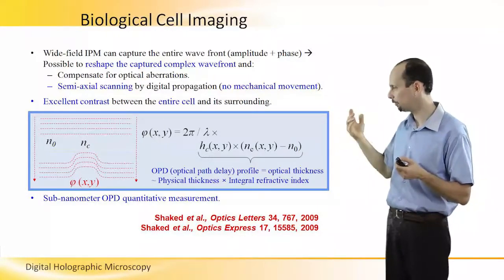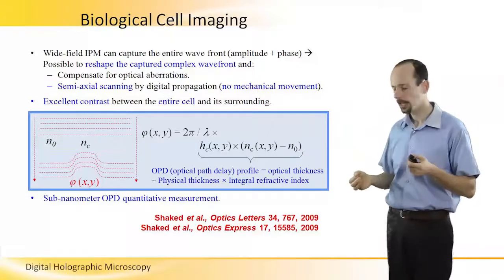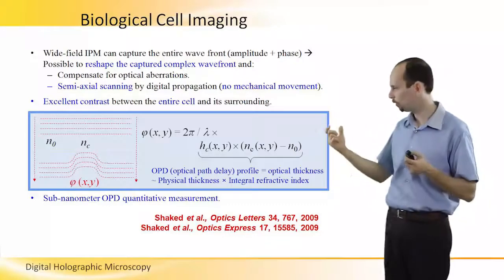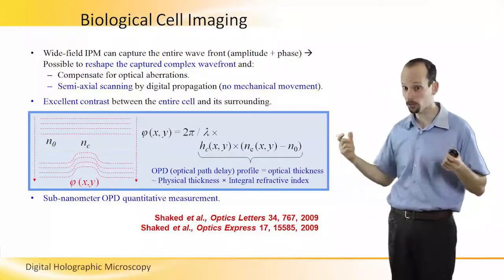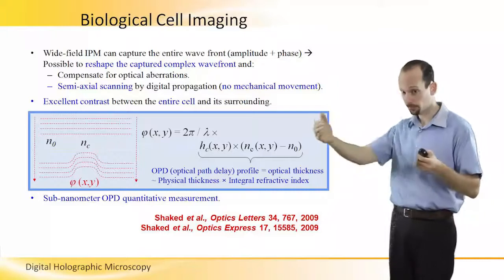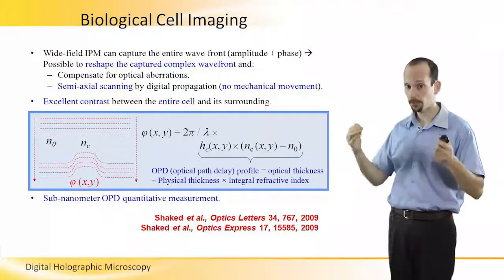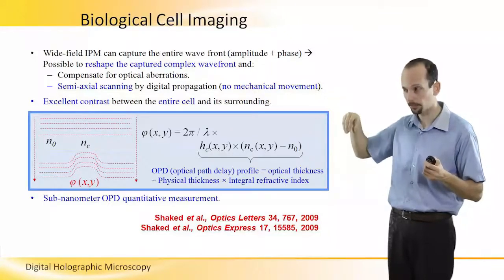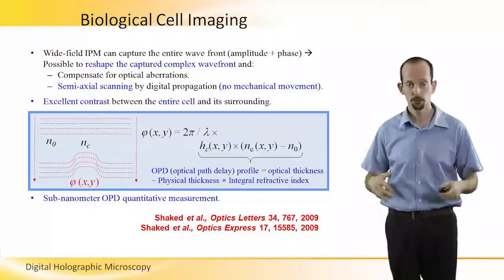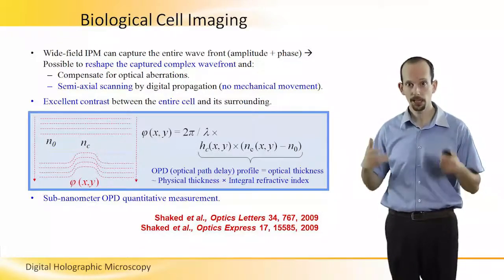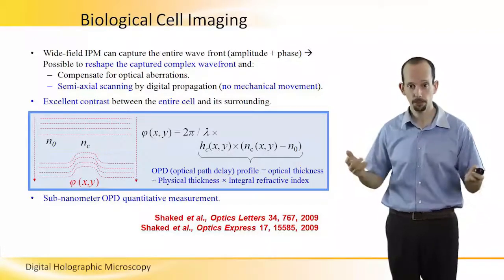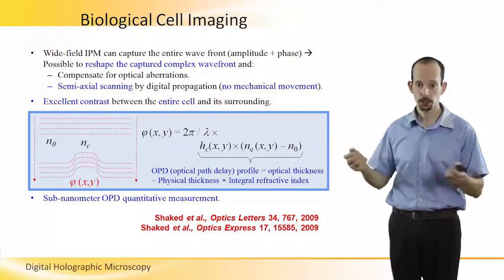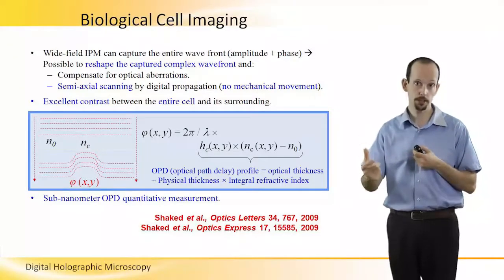The accuracy of the measurement that can be obtained for the OPD, the optical path delay, or the optical thickness of the sample, is amazing. It is sub-nanometer if I'm taking this OPD and sample it in time. That means that I'm very sensitive to very small optical thickness changes in the sample, and I can, for example, trace how cells change their index of refraction, or their physical thickness.